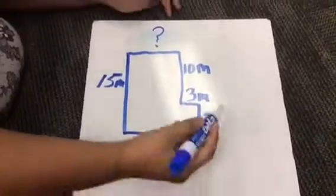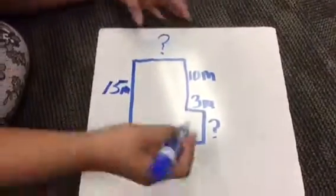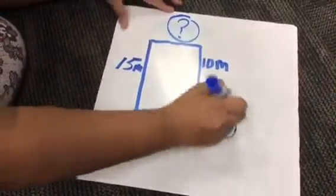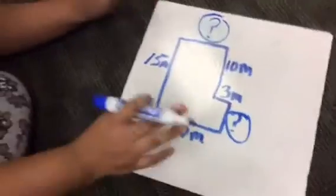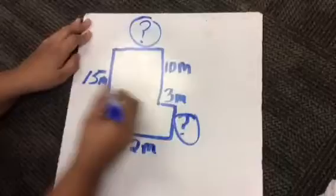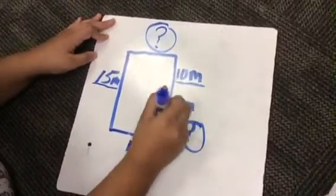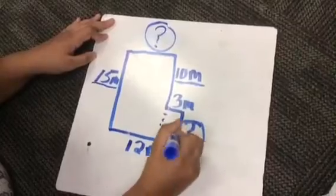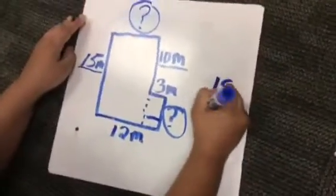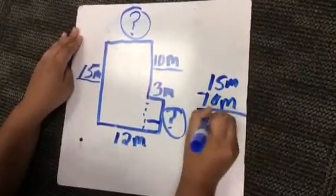So today we are doing a little bit harder problem when finding the missing length of a shape. So this time we have 2 missing. So what do we do? First we have to subtract, but we have to find what we need to subtract. So before we get this we have to do the 15 meters minus 10 meters. Because you have to draw that imaginary line to equal this. So you do 15 minus 10 meters equals 5 meters. So right here equals 5 meters.